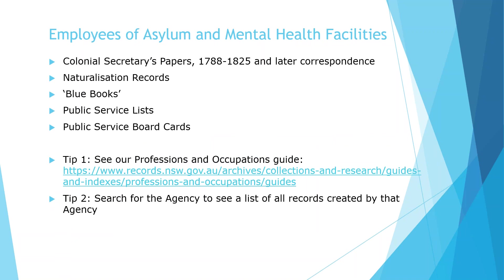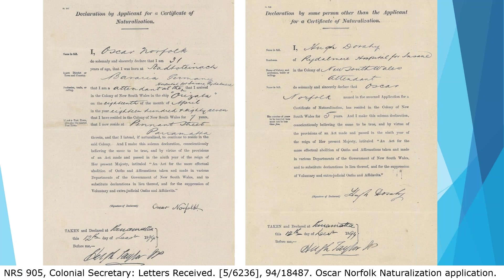What if your ancestor was in an asylum or mental health facility as an employee rather than a patient? If your ancestor was an employee of a NSW Government Asylum or mental health facility, it is possible that there is a reference or record to their employment. These can be located in the Colonial Secretary's papers and main series of correspondence, such as in applications for naturalisations, in blue books, in public service lists, in public service board cards, or in departmental records and records created by the particular asylum or facility. Our Professions and Occupations Guide has specific information about blue books, public servants, nurses and medical practitioners.